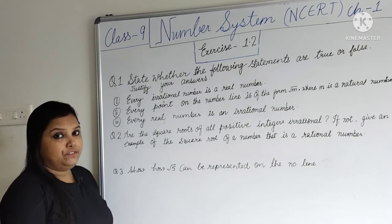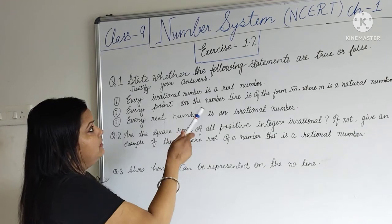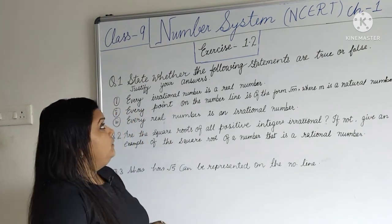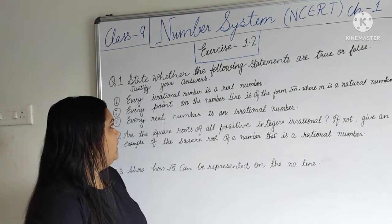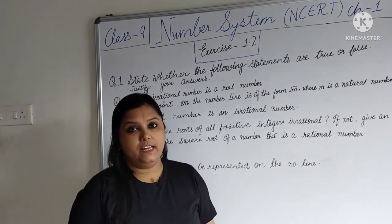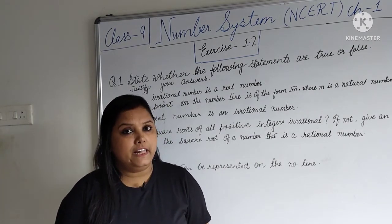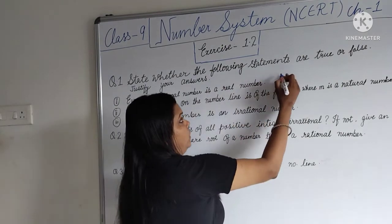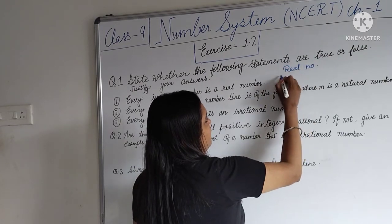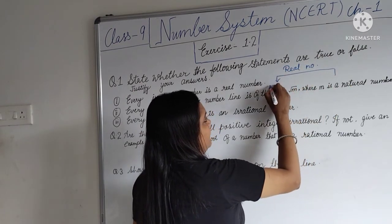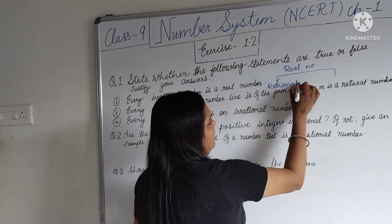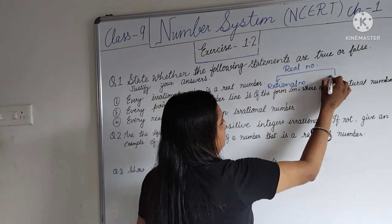Now let's start the exercise. The very first question says: state whether the following statements are true or false, and you have to justify your answer also. The first statement is: every irrational number is a real number. So what are real numbers? Real numbers include rational numbers and irrational numbers.